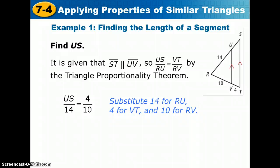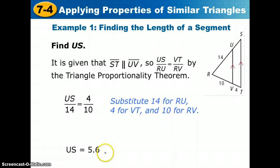Now we should be able to check our answer. Your answer should look something like this. US equals 5.6. We get that answer by solving the proportion using the cross products property. 10 times US would equal 14 times 4. 14 times 4 is 56, so US times 10 equals 56, and then divide both sides by 10. 56 divided by 10 is 5.6.